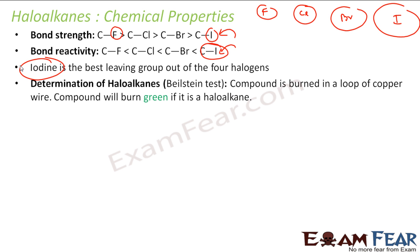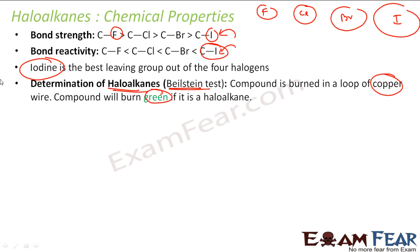So if you want to find whether a particular compound is a Haloalkane or not, you can do the Beilstein test. In this test, you burn the compound in a loop of copper wire and the compound will turn green. If it turns green, it contains a Haloalkane. So it's a very good test for Haloalkanes.